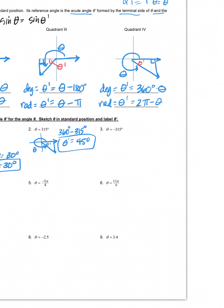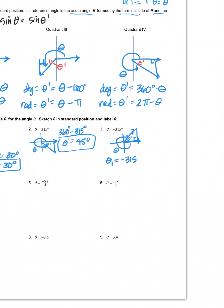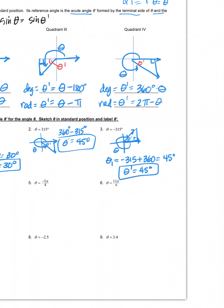Number three: negative 315 degrees. Going in the negative direction, the terminal side ends up in quadrant one. Since it's a negative angle, I need to find the coterminal angle first. I add a revolution of 360, giving me 45 degrees. Then I ask: is this an acute angle made with the x-axis and the terminal side? Yes — so theta prime is also 45 degrees.